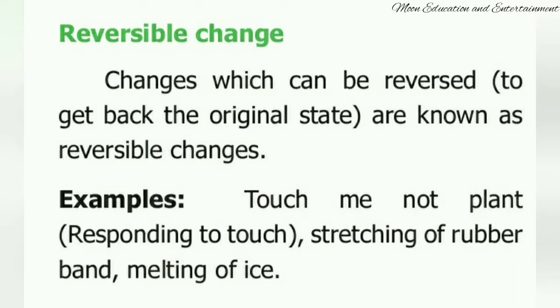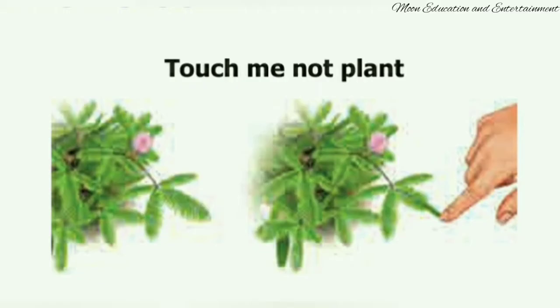Reversible change: changes which can be reversed back to their original position are called reversible changes. For example, stretching of a rubber band. But the best example is a touch-me-not plant — when you touch it, it shrinks, and when you leave your hand, it comes back to its normal position.